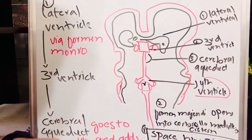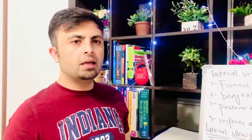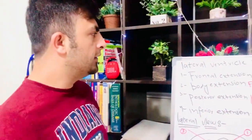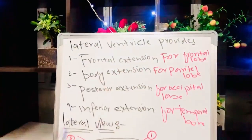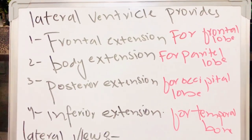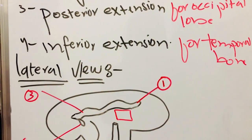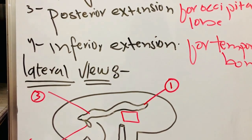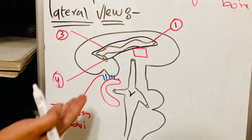The cerebromedullary system is provided by the foramen of Magendie. Our lateral ventricle provides different extensions — for example, the frontal extension for the frontal lobe, the body extension for the parietal lobe, the posterior extension for the occipital lobe, and the inferior extension for the temporal lobe. As we can see in the diagram, this region is our lateral ventricle providing these extensions.